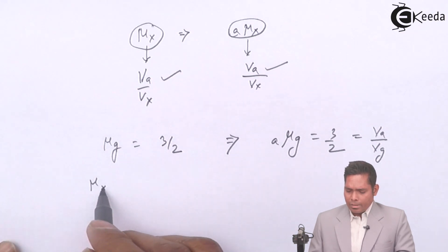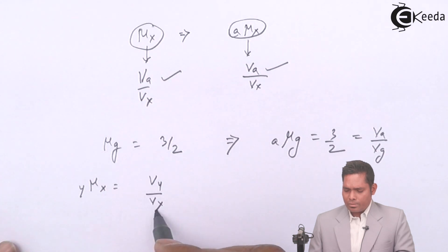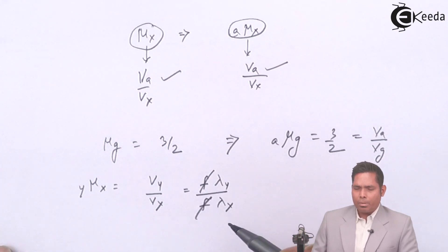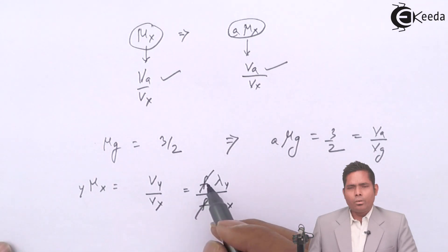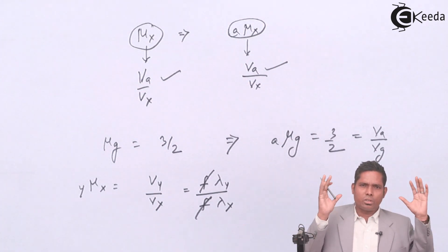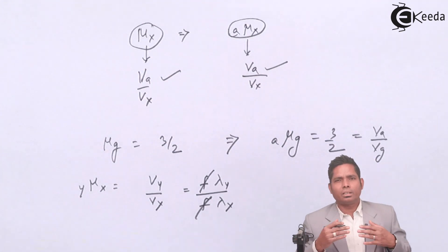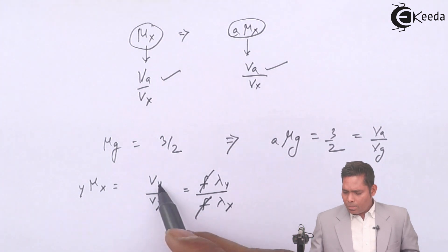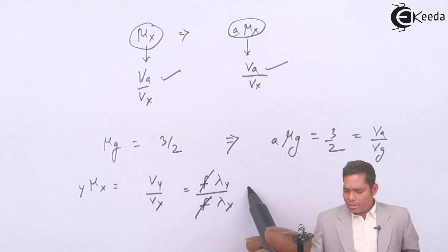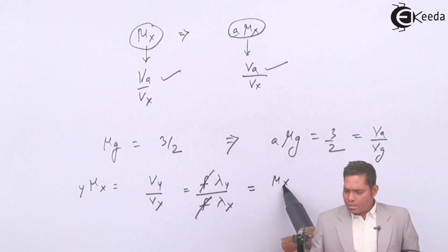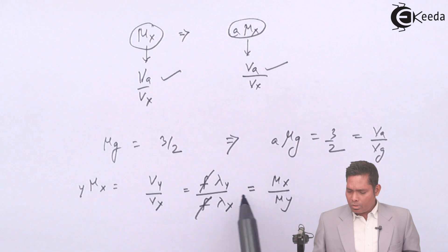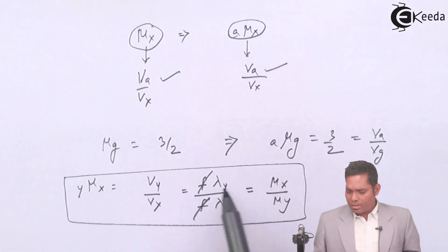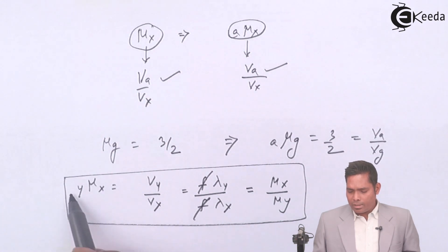The refractive index of medium x with respect to y equals velocity in y divided by velocity in x. Since velocity equals frequency times wavelength, and frequency remains the same when light changes medium — because frequency depends on the source — we get mu_xy equals lambda_y divided by lambda_x. This can also be written as mu_x divided by mu_y. This is an important formula to remember.